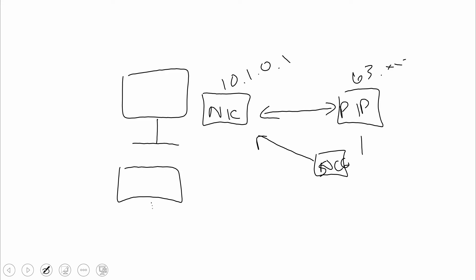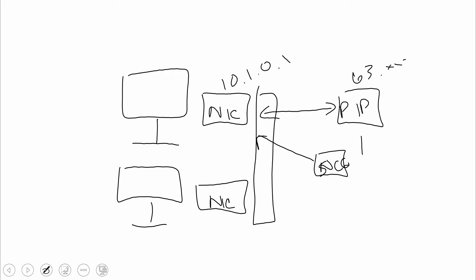What if we want multiple VMs? Let's say we have two VMs, both with a NIC, and we want to treat them like a cluster. In that model, we would want to establish a load balancer. We can do two different things: internal load balancing and external load balancing.